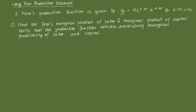The first problem is to find the firm's marginal product of labor and marginal product of capital. We do that by taking the first-order partial derivative with respect to the particular input. For marginal product of labor, that's the partial of Q with respect to L. We get 4 times 0.25 — which equals 1 — times L raised to negative 0.75 times K raised to 0.25, leaving us with K raised to 0.25 over L raised to 0.75. That's MPL.